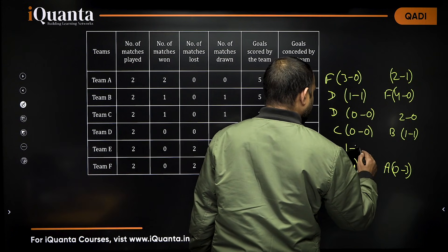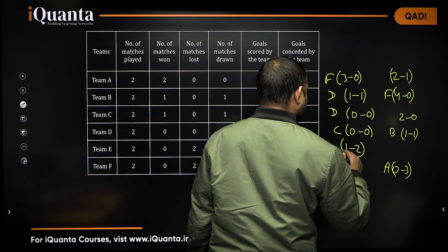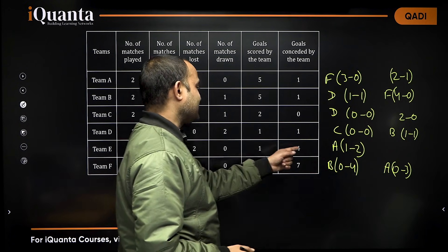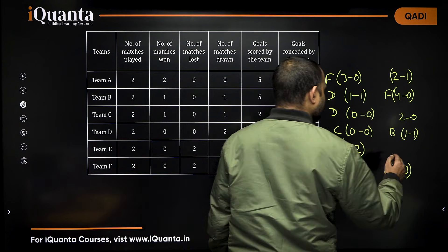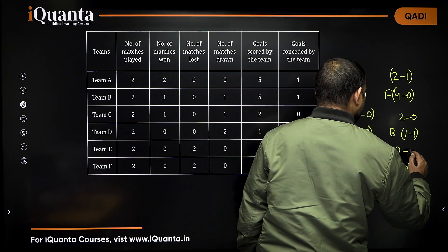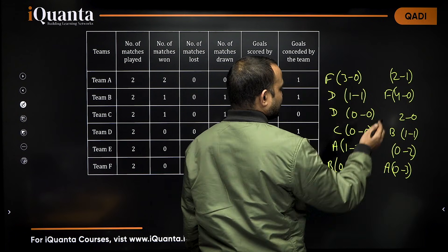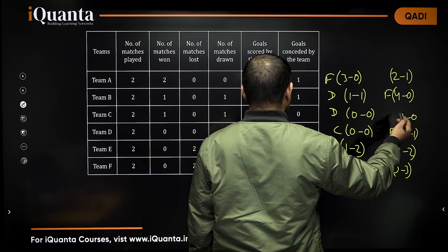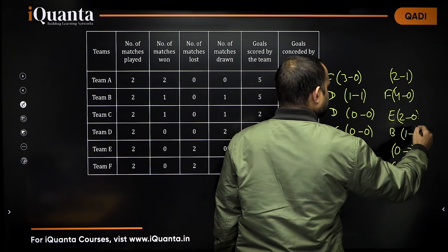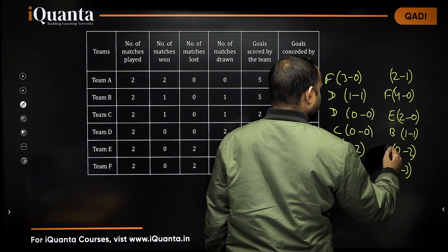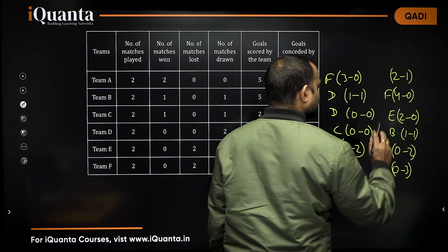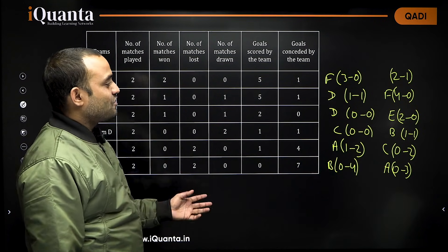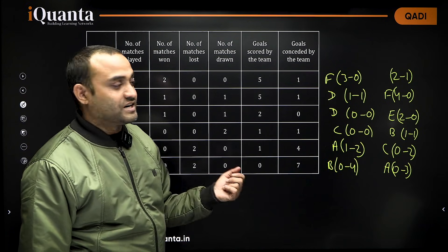Team A beat F by 3-0. And the second match of A must read 2-1. Against which team? Only one team is left, which is E. In case of E, E versus A, the score line is 1-2. And the second match must be 0-2, against C. So, C versus E, the result was 2-0. All matches are now done.